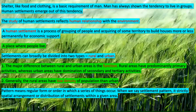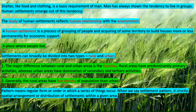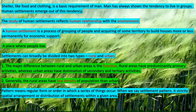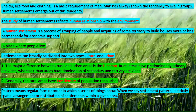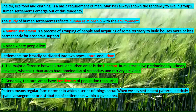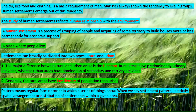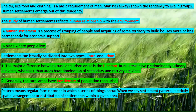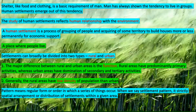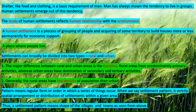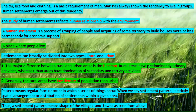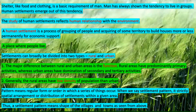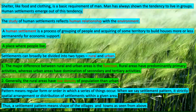Pattern means a regular form or order in which a series of things occur. When we say settlement pattern, it strictly means the spatial arrangement or distribution of settlements within a given area. Thus a settlement pattern means the shape of villages and towns as seen from above — that is, an aerial view.